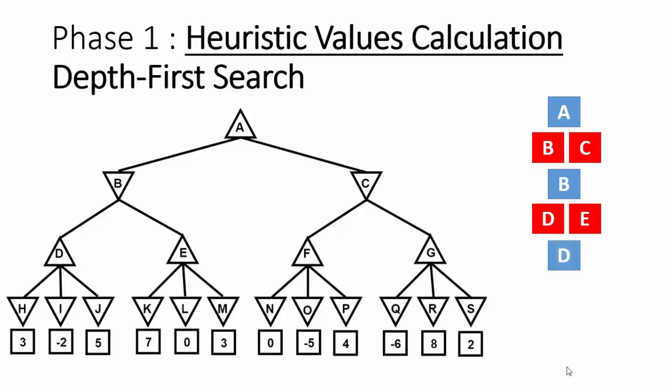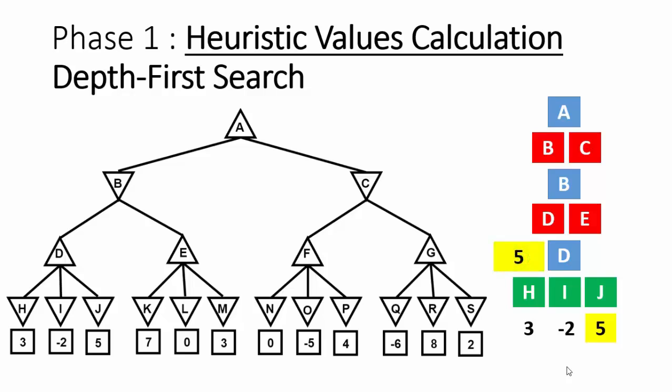Starting with node D, its heuristic value can be calculated based on its children. Because the children of node D are leaf nodes, we can calculate node D's heuristic value directly. Node D's children are H, I, and J, with heuristic values 3, -2, and 5 respectively. Because node D is a Max player and Max tries to maximize its score, it selects the maximum heuristic value of its children, which is 5. So node D's heuristic value is 5, and this value is placed on the tree.